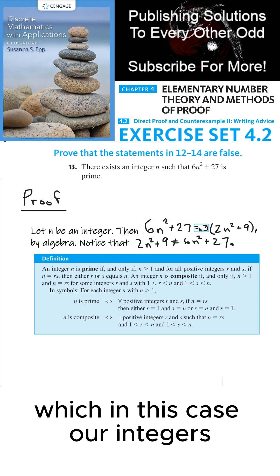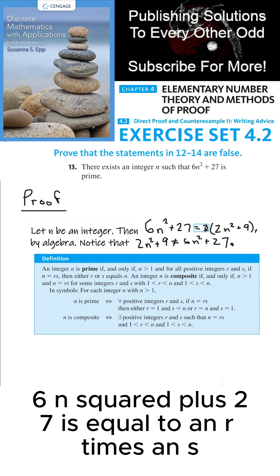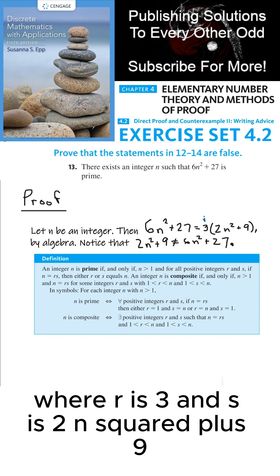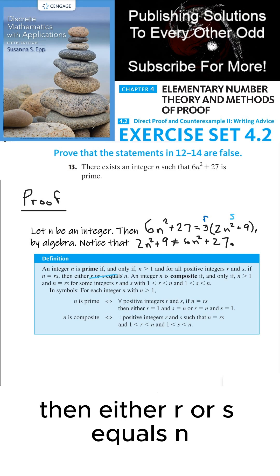which in this case our integer 6n squared plus 27 is equal to an r times an s, where r is 3 and s is 2n squared plus 9, then either r or s equals n.